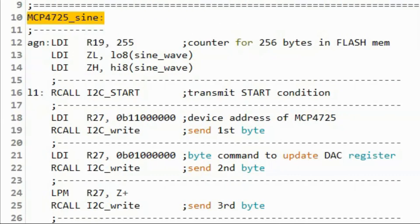This is the assembly code used to generate the sinusoid on the scope. So, we assign register R19 as a counter to keep track of the 256 bytes stored in flash memory. We assign pointer Z to point to location sine wave, which contains the 256 bytes.